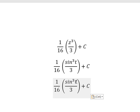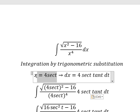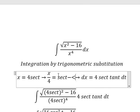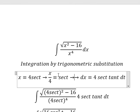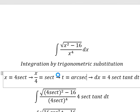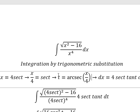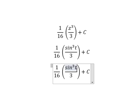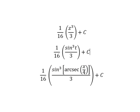For t, we divide both sides by 4. We get t equals arcsecant of s over 4. Substituting back gives the final answer. This is the end — thank you for watching.